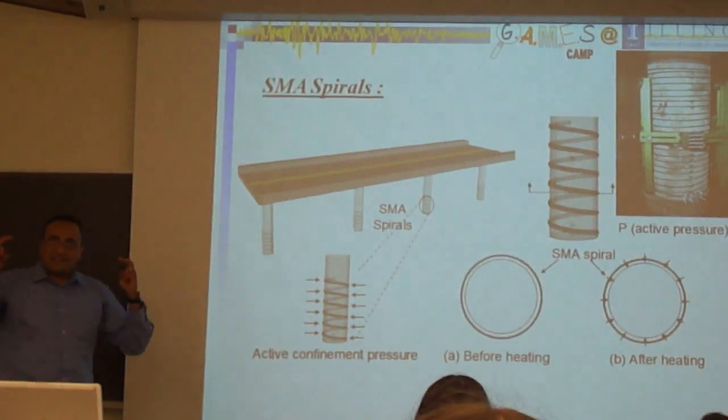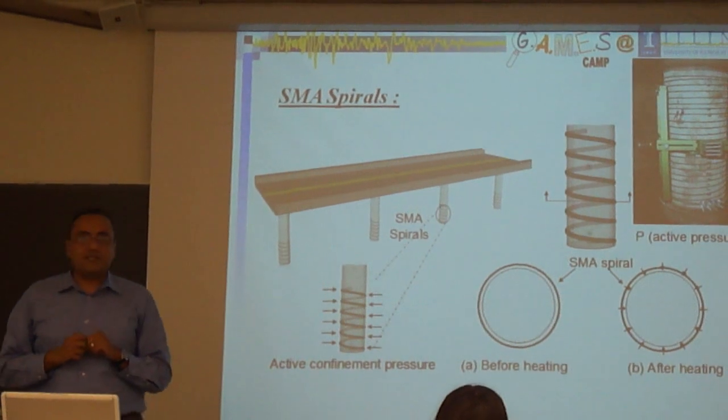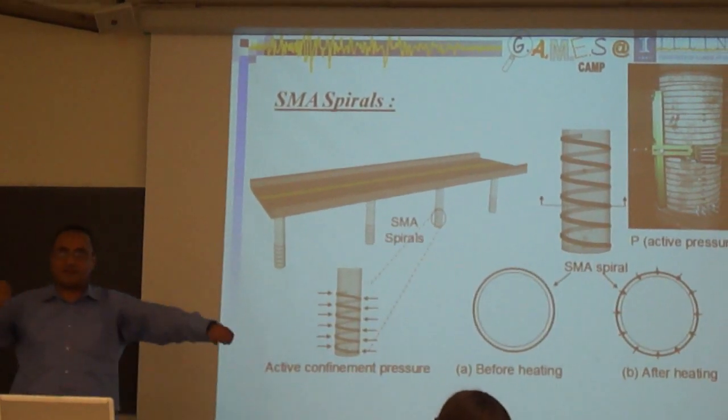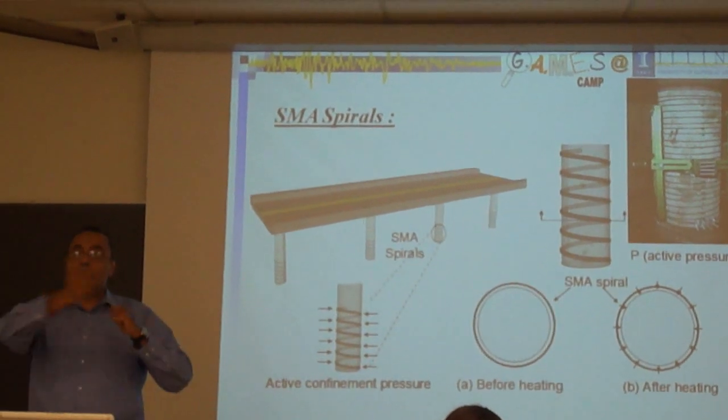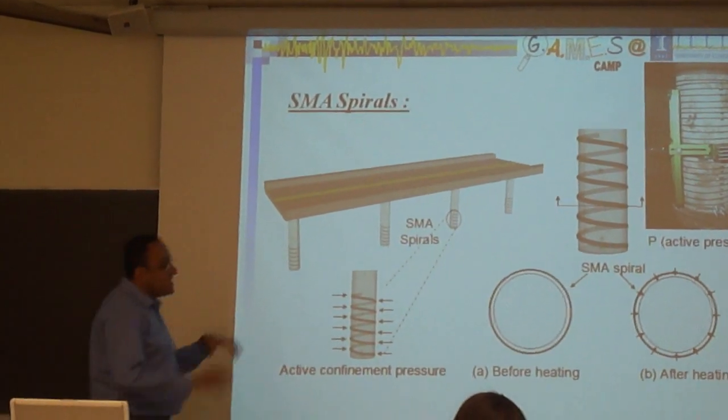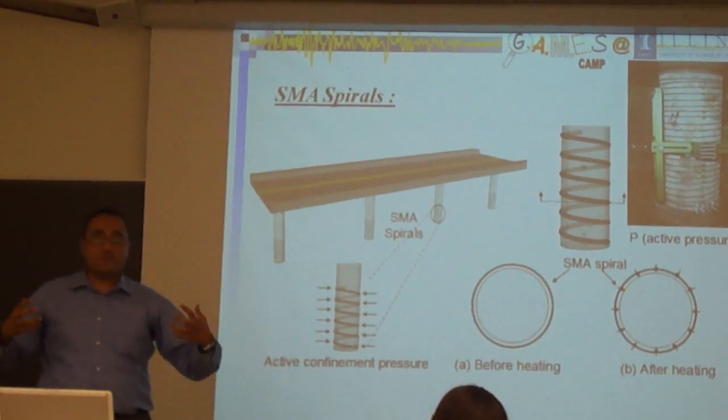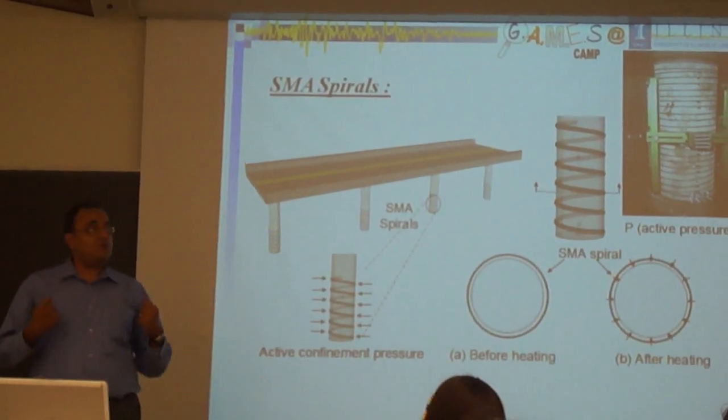Basically, what we did is that we used SMA spirals. And what we did here is that we stretched the wires like what I did right now exactly with this spring. We wrap it around the column at the very critical location that we are interested in that could explode during an earthquake. And once we wrap it, what do we do next?